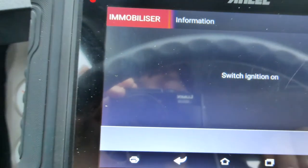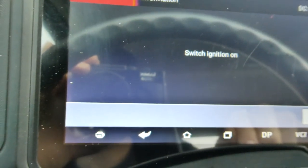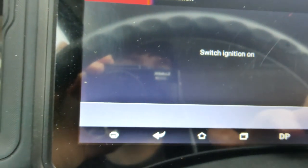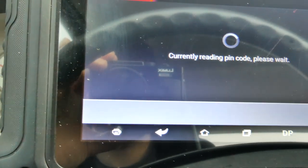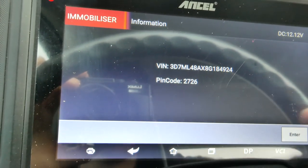All right, first we're going to read the pin code. All right, we have the ignition on. We're going to hit enter. All right, so it gave us our code.